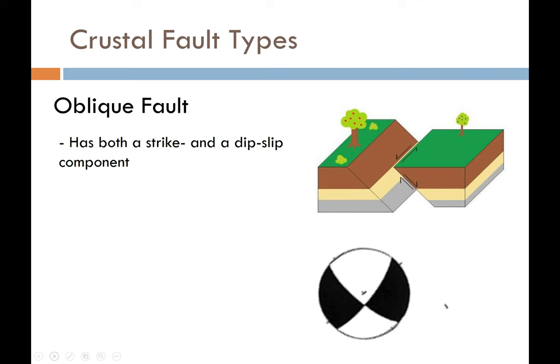An oblique fault is a combination of a strike-slip and either a normal or a reverse fault, producing a beach ball shape that's a marriage between the two. Most faults in the real world have some level of obliquity — there's usually some combination of both strike-slip and dip-slip rather than pure end members.